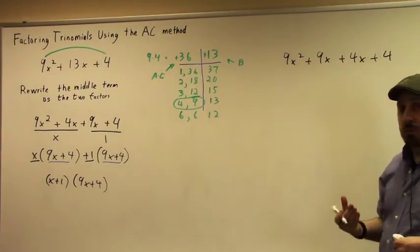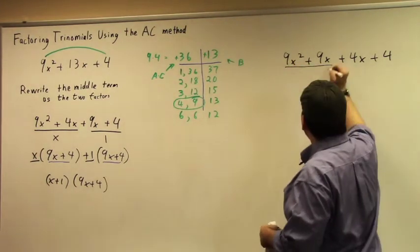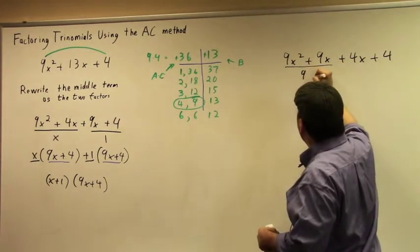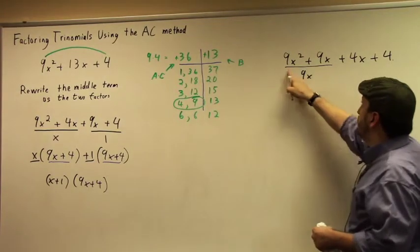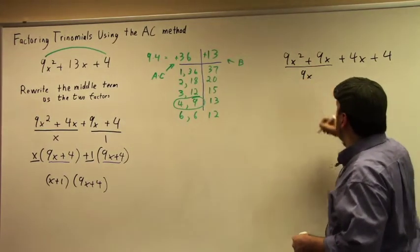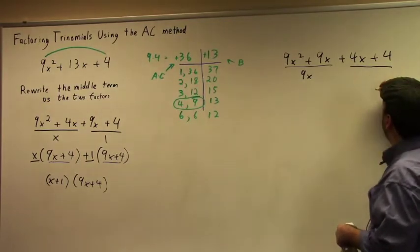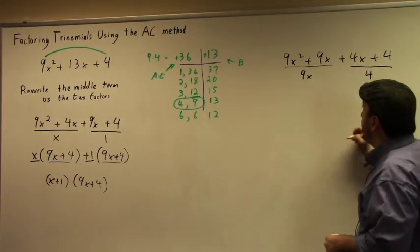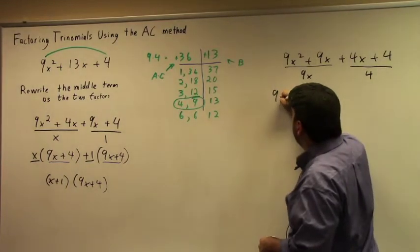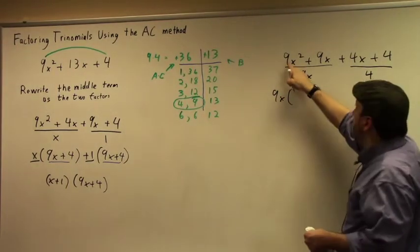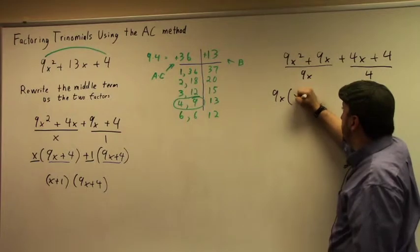It's just going to work out a little bit differently. In this case, our GCF instead of being x is going to be 9x because they both have a factor of 9 and they both have a factor of x. In this case, our GCF is going to be 4 instead of 1.